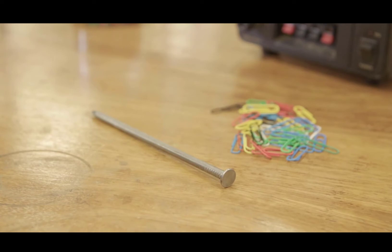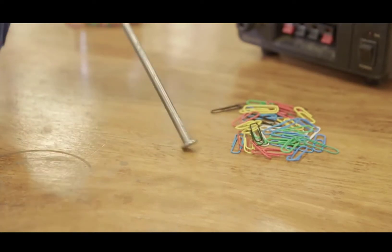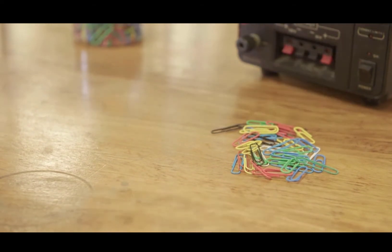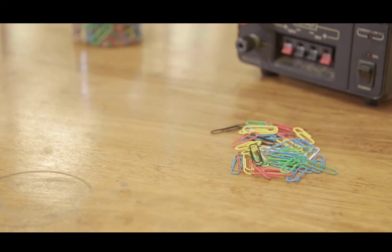Iron is a magnetic material, but the iron rod on its own does not attract any iron filings or paper clips. This shows that despite being magnetic, iron does not always act as a magnet.